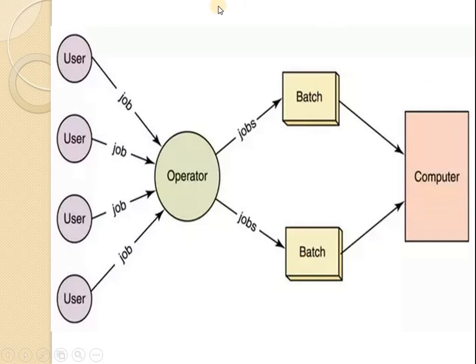In batch operating system, the job sequence was decided by the operator. Jobs were recognized with special markers indicating their start and end. Operators batched together jobs with similar needs and submitted them to the batch processing system, where they were executed automatically without any operator interruption. After execution, each job was sent to the appropriate user.